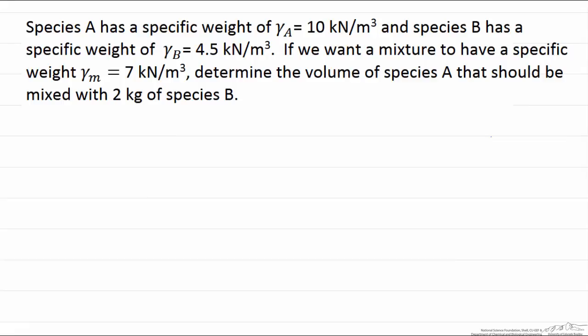So let's start by writing down what we know. The specific weight of species A is 10 kN per m³ and we know that that is equal to the mass of A times gravity over the volume of A. We write the same thing for B and we write the same thing for our mixture.